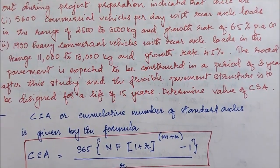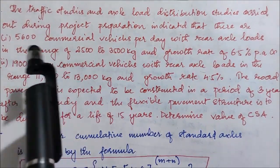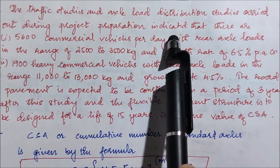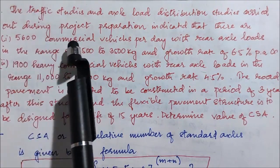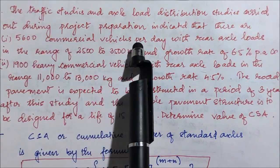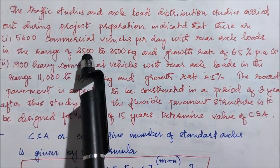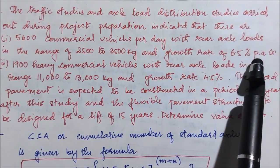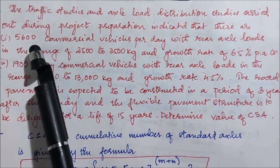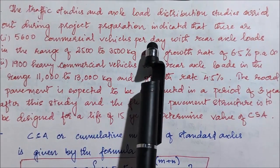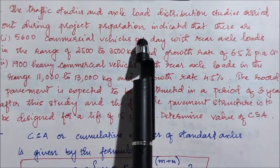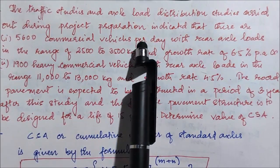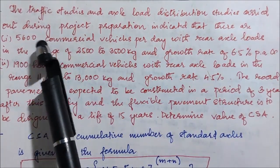Now let's look at the problem. Traffic studies and axle load distribution studies carried out during project preparation indicated that there are 5600 commercial vehicles per day with rear axle loads in the range of 2500 to 3500 kg and a growth rate of 6.5 percent per annum. This is the first class of vehicle.